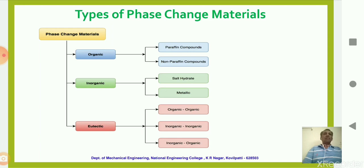Phase change materials are generally categorized into three types: organic phase change materials, inorganic phase change materials, and eutectic phase change materials. Organic PCMs include paraffin compounds and non-paraffin compounds. Inorganic PCMs include salt hydrates and metallic phase change materials. Eutectic PCMs are a mixture of either two different organic PCMs, two different inorganic PCMs, or a mixture of organic and inorganic PCMs.